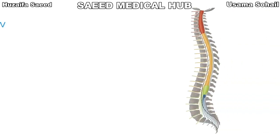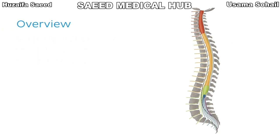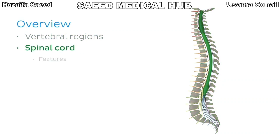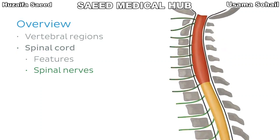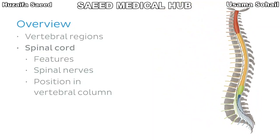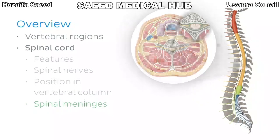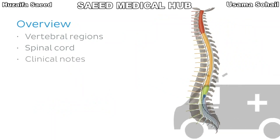So what are we going to talk about in this tutorial? Our main aim is to understand the relationship between the spinal nerves and the vertebral column. First of all, we'll have a look at different vertebral regions and the general skeletal side of things. We'll then move on to the spinal cord, run through a few features, and see how the spinal nerves anatomically relate to the vertebral column. We'll also focus on the spinal cord's position in the vertebral column and how that is influenced by fetal development. Then we'll discuss the meningeal coverings of the spinal cord. Finally, we'll take a look at some clinical notes and wrap up for the day.